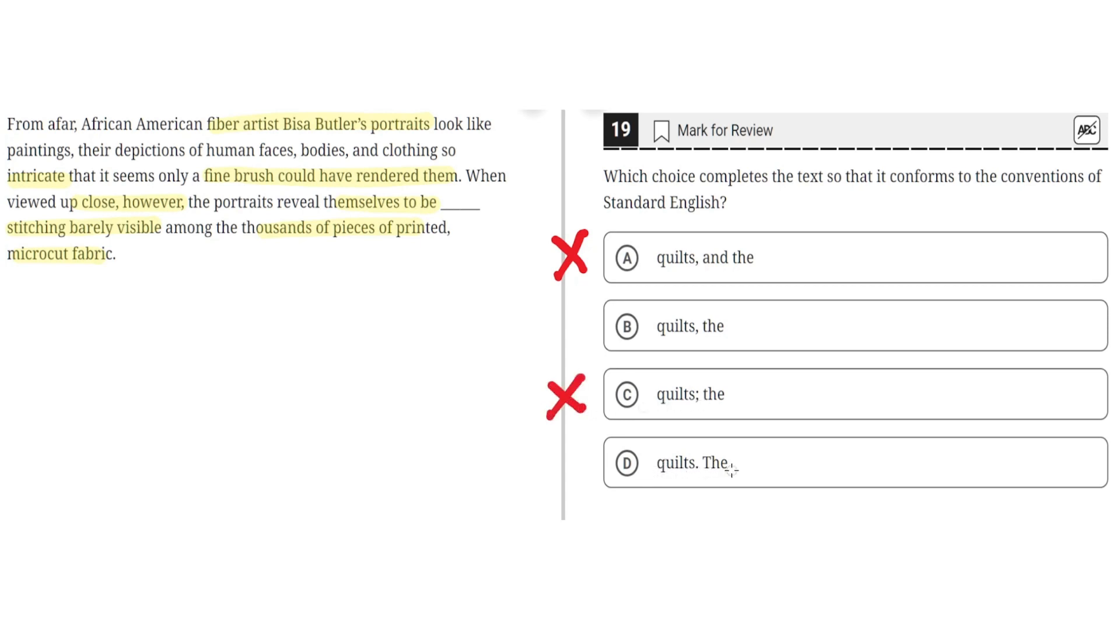D. Quilts, period, the. This is incorrect because this splits the sentence into two, and the second sentence would be a sentence fragment, and therefore D is incorrect, and the correct answer is B.